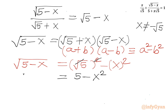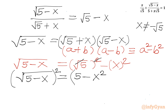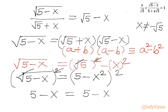The right-hand side uses the difference of two squares formula, a squared minus b squared. So I can write the equation as square root of 5 minus x equals 5 minus x squared. Now I will square both sides, so the square root and power 2 cancel on the left. The left-hand side becomes 5 minus x, and the right-hand side is 5 minus x squared, whole squared.